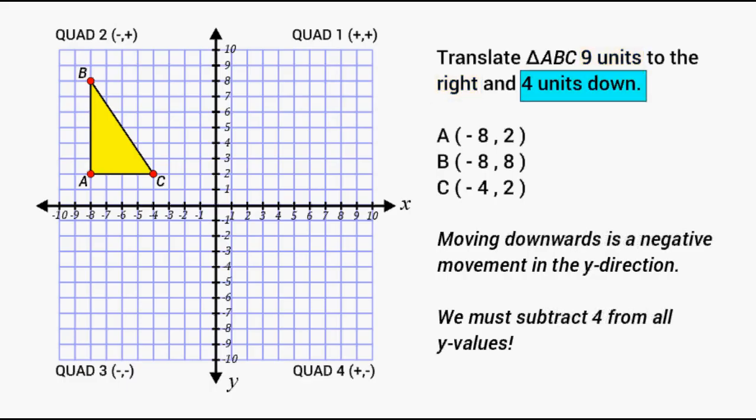And we have to translate this triangle four units down as well. Any movement downward is going to result in a negative movement in the y direction. Therefore we're just going to subtract 4 from each y value.